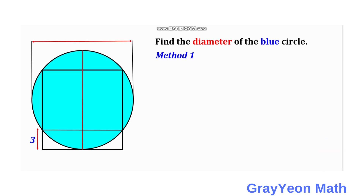Since this is a square, it is divided into 2 equal parts by this red segment. So if this half is s, then the other half is also s. It is given that this distance is 3, and this remaining side is actually 2s minus 3, because 2s is the whole length and we subtract 3.